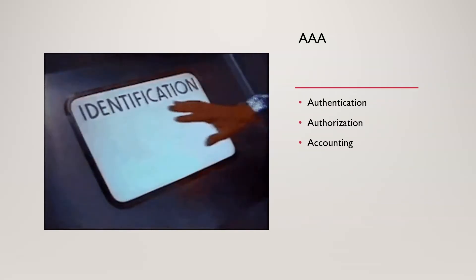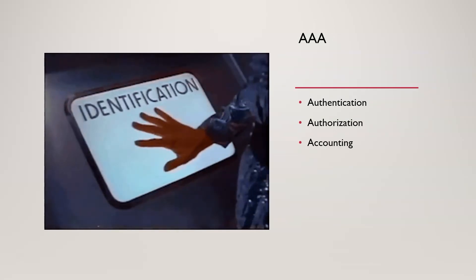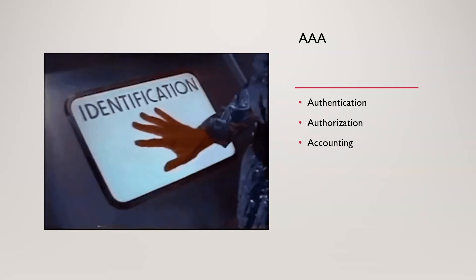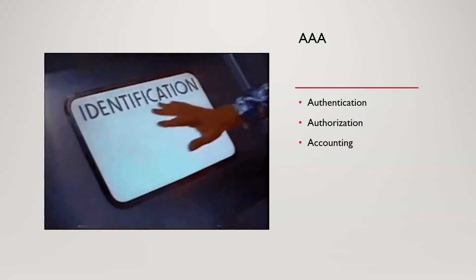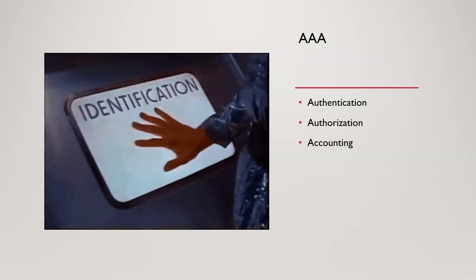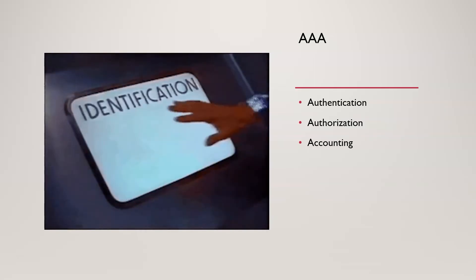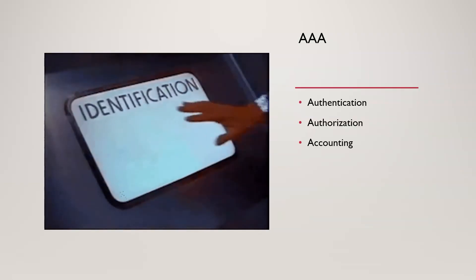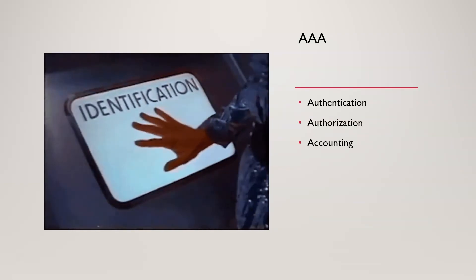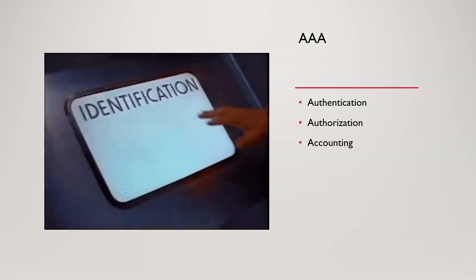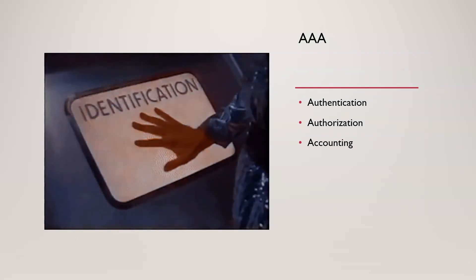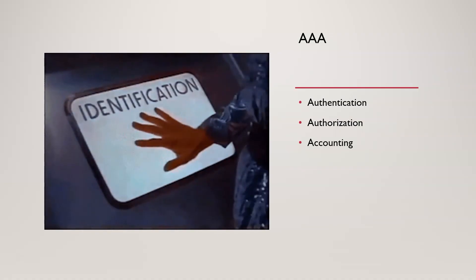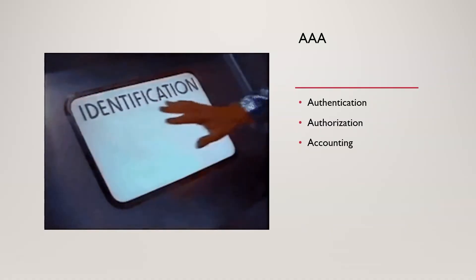Authorization is where we determine what actions or resources an authenticated user, system, or application is allowed to access. For example, if I'm a nurse, authorization ensures I have the appropriate permissions to chart on a patient after taking their vital signs. Ways to do this include RBAC — role-based access control — and ABAC — attribute-based access control. With RBAC, all nurses in the company get a defined level of access.